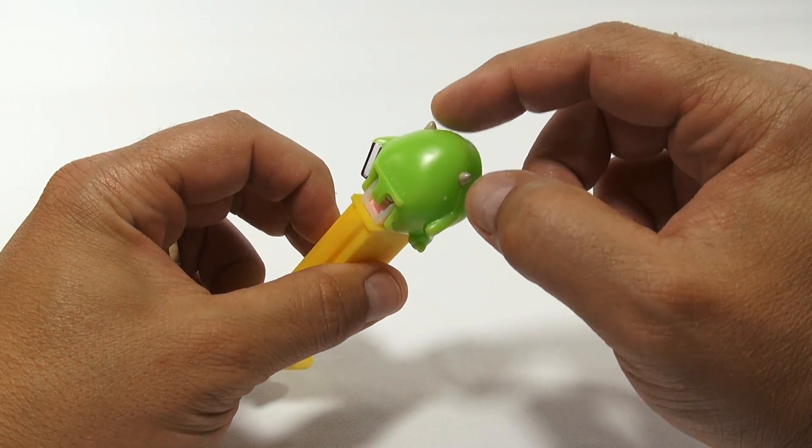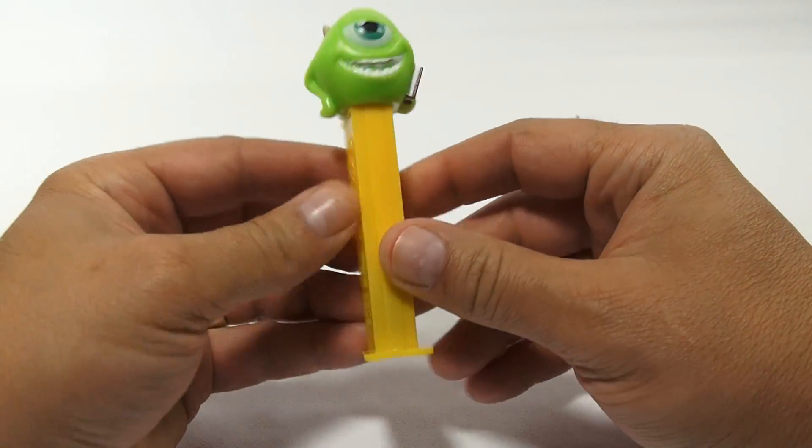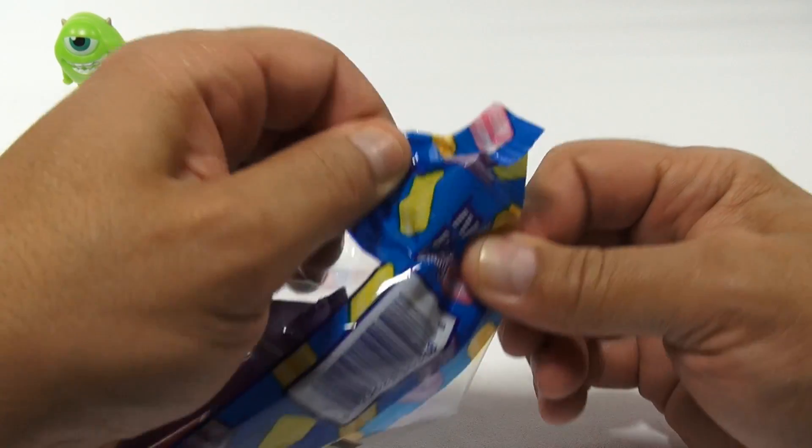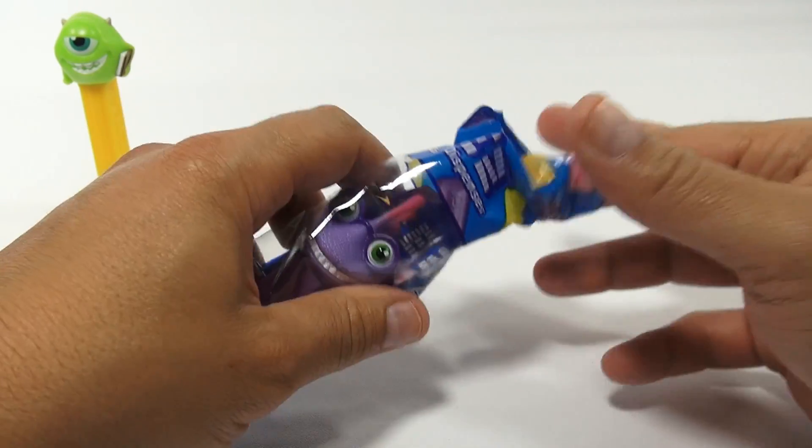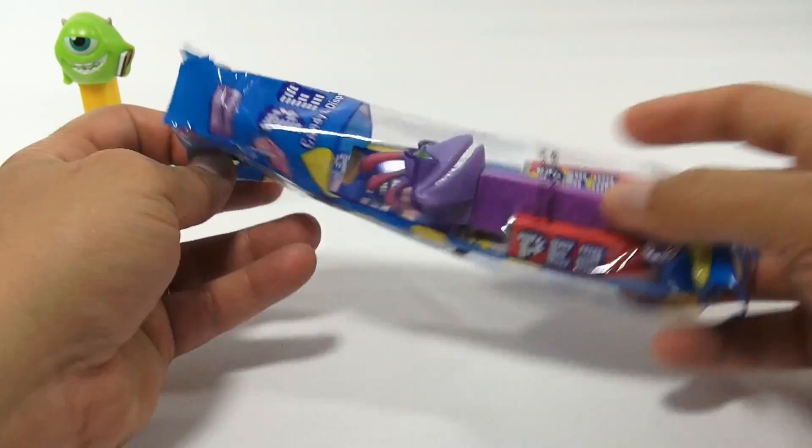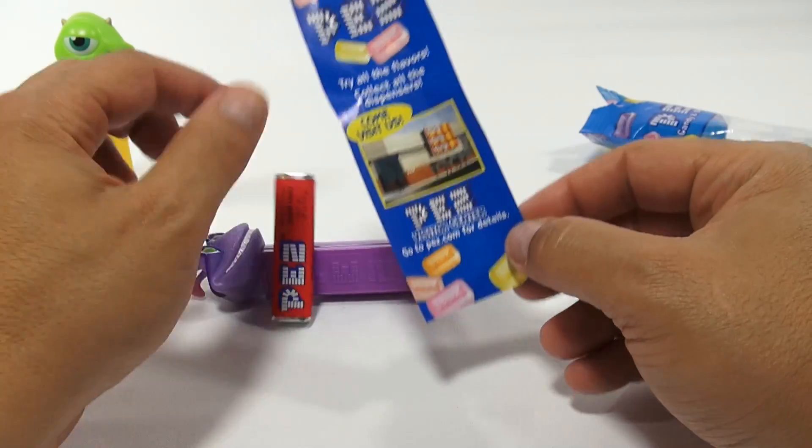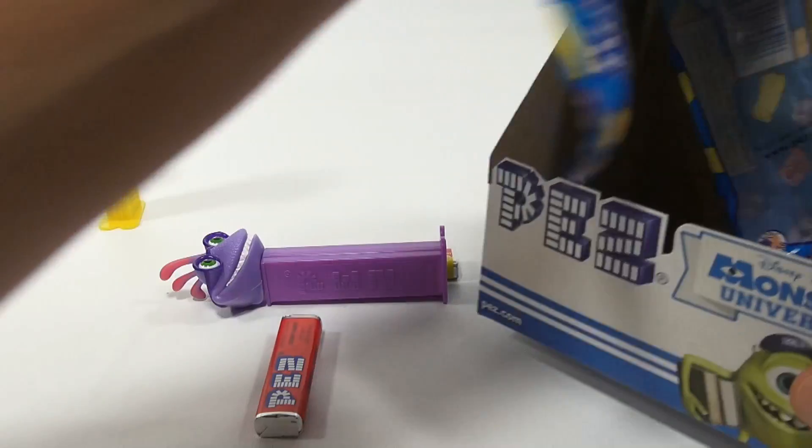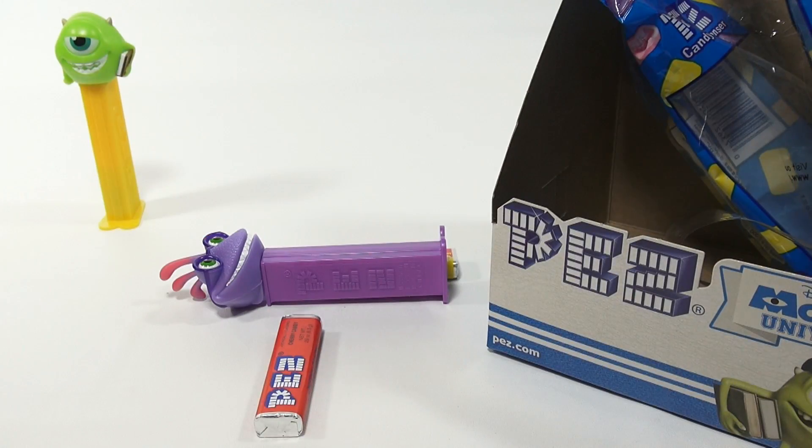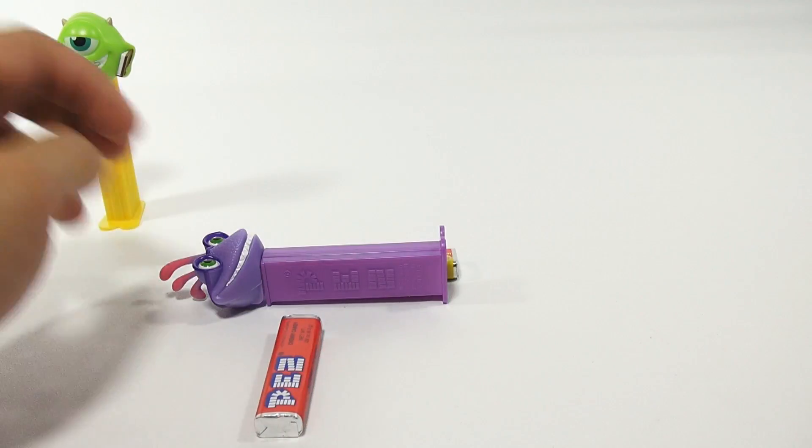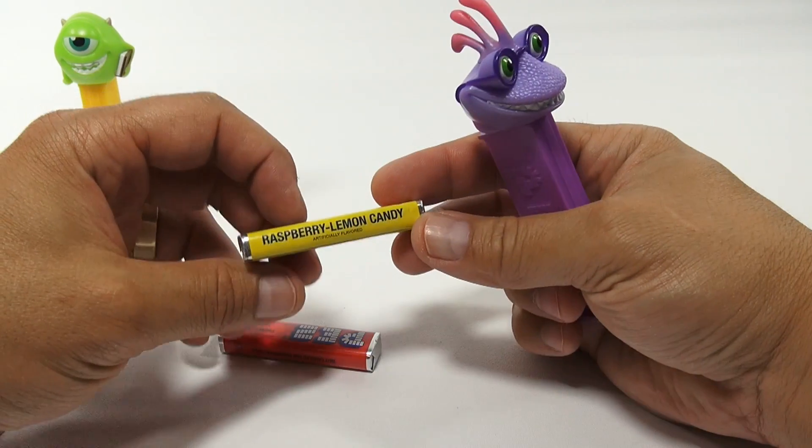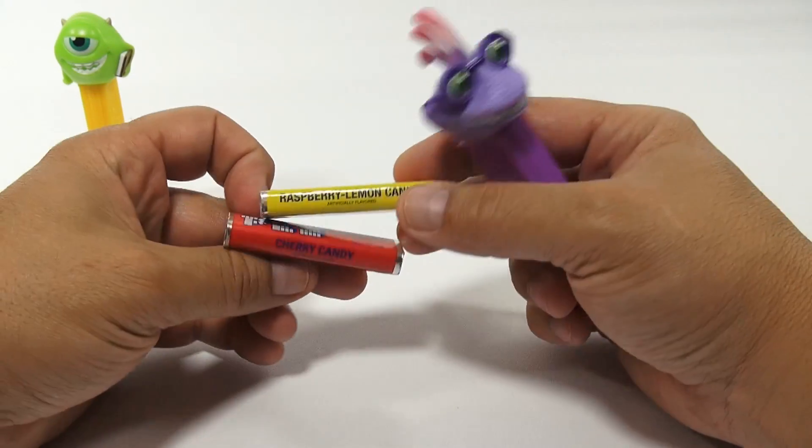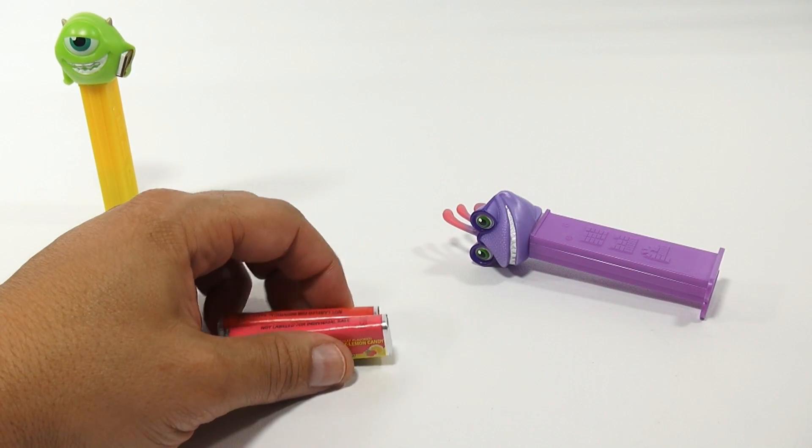Let's check out Randall. Same insert card, we'll just put all that stuff in the box next to me here. This one came with raspberry, lemon candy, and cherry. Let's just collect all the candies.